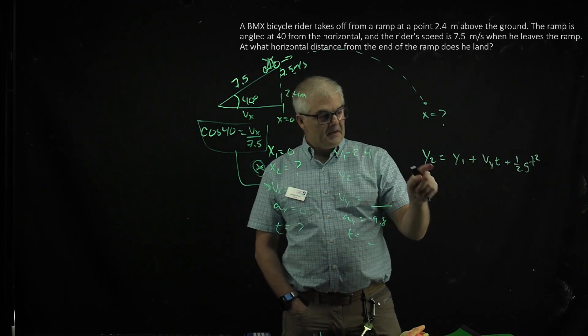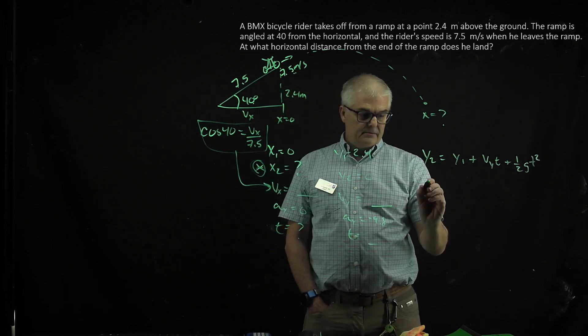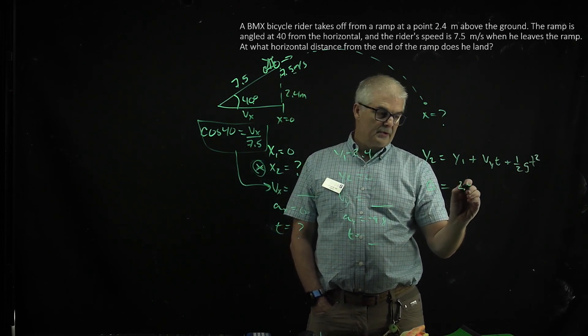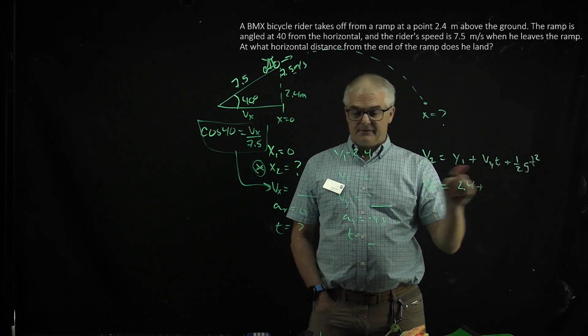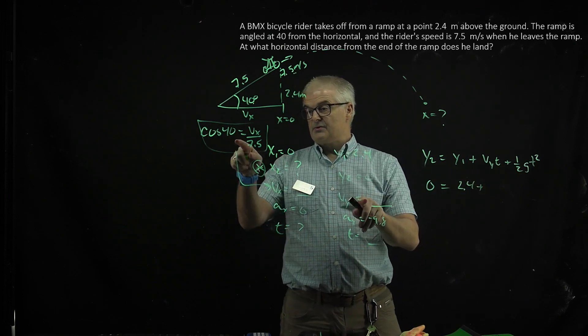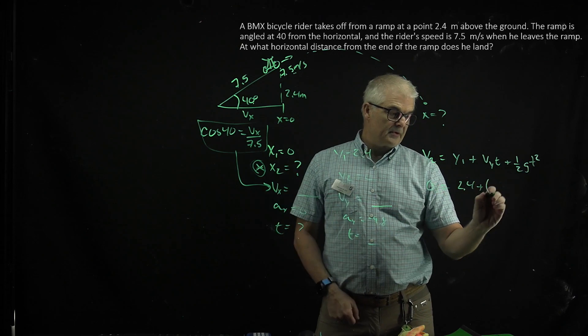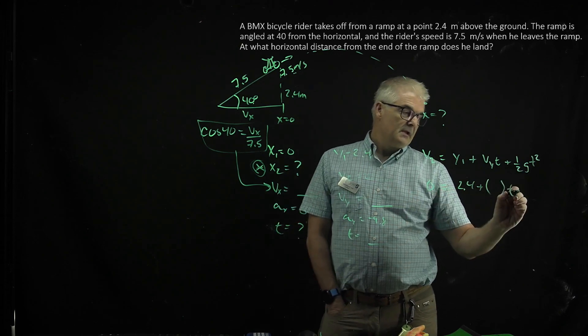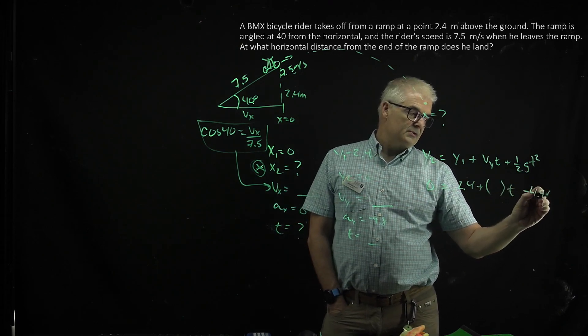Now, y2 is 0 equals 2.4 plus... Now, you have to find the number. When you do this whole cosine-sine thing, there's a number here times t, so you'll have to figure out what that is, minus 4.9 t squared.